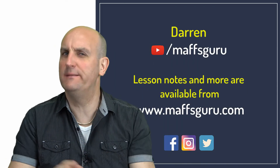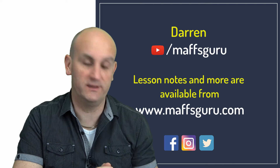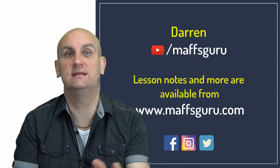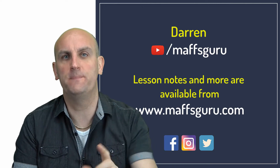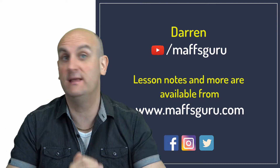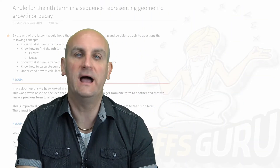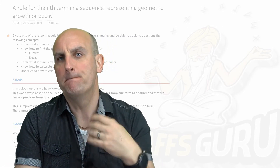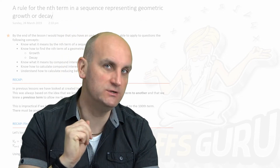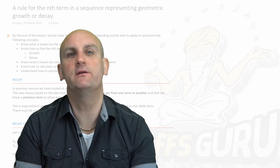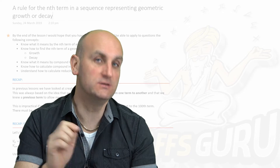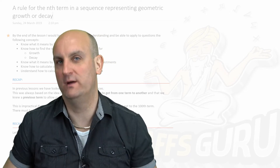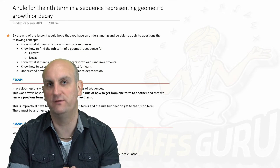Welcome to this video on the rule for the nth term in a sequence representing geometric growth or decay. In previous videos we looked at how to create a sequence where if we knew the rule we could keep going term by term. But what if I gave you the first term and the rule and asked you to get to the 100th term? That's going to take serious time — hitting the equals button over 99 times. There has got to be a better way, and that's what this video deals with.